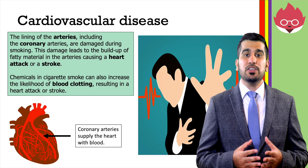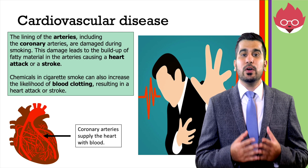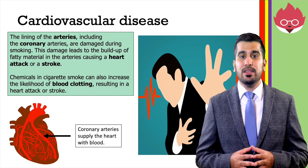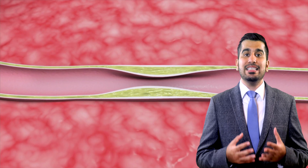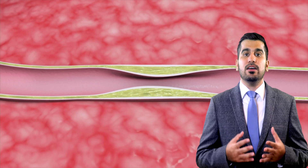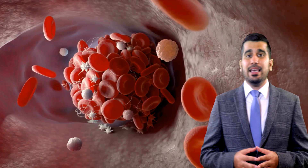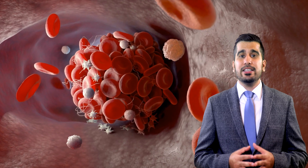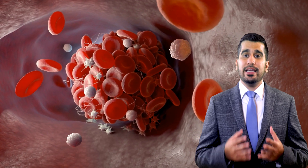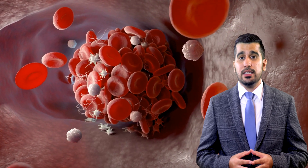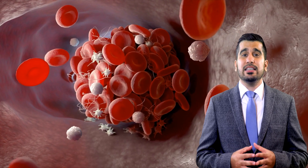For question 3, the lining of the arteries, including the coronary arteries, are damaged during smoking. This causes a build up of fatty material in the arteries, causing a heart attack or a stroke. Chemicals in cigarette smoke can also increase the likelihood of blood clotting, resulting in a heart attack or a stroke.